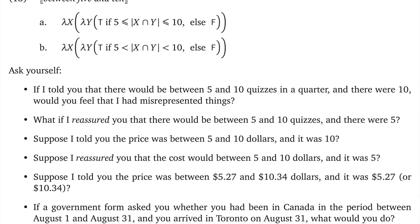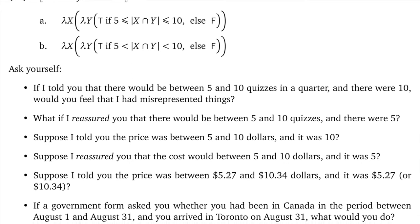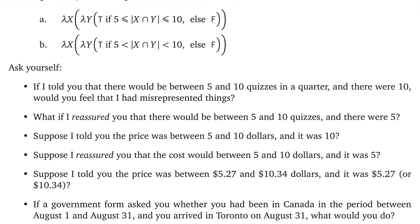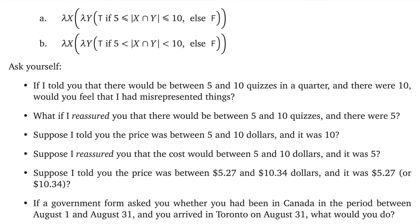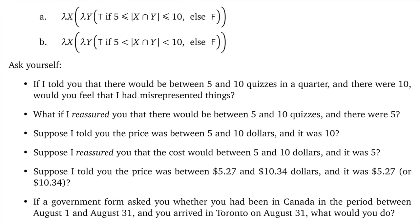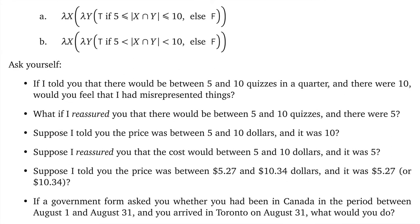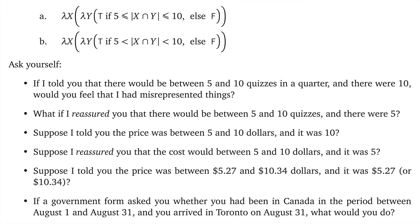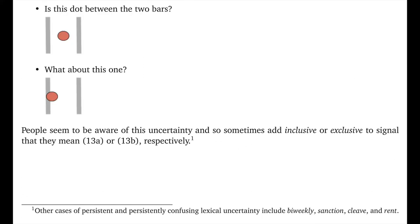And things might be different yet again if we move into other less numerical settings. If a government form asked you whether you'd been in Canada in the period between August one and August thirty one and you arrived in Toronto on August thirty one, what would you do? Would you err on the side of caution or maybe it would depend on what the nature of this form was? Or how about clearly continuous examples? I think we can agree that the dot is between the two lines in this first example. What about the second?